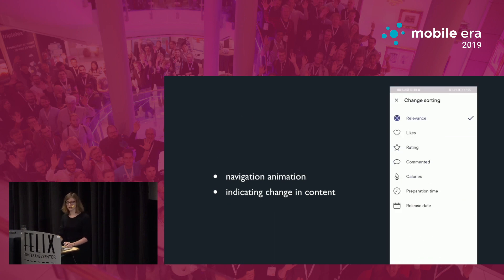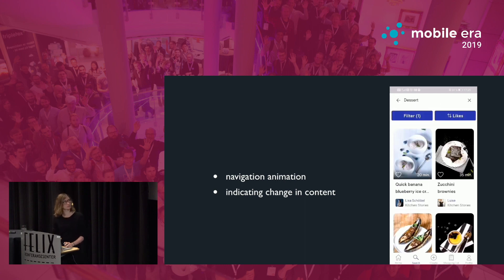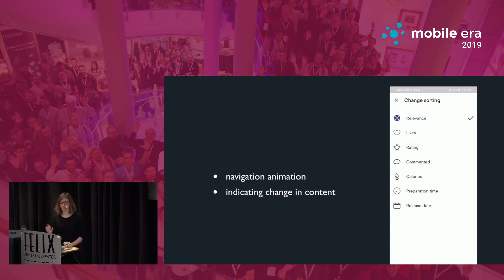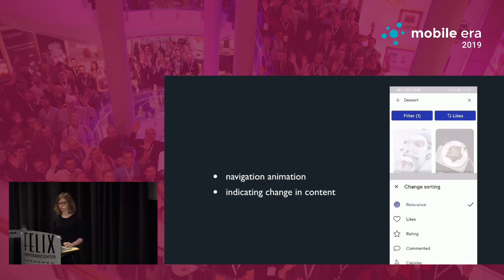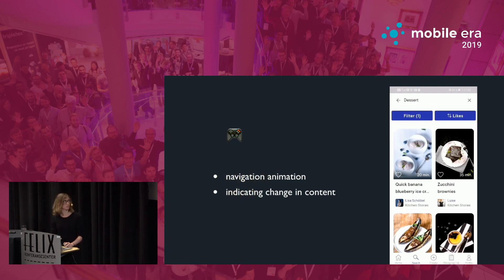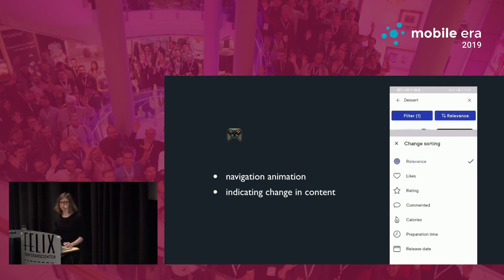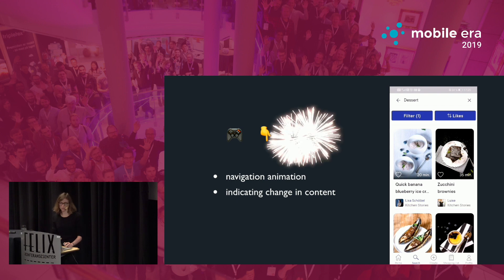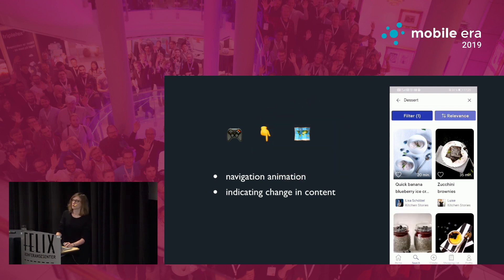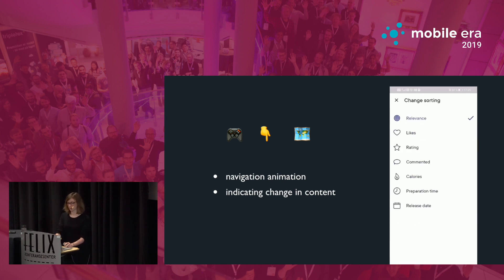Here is a kitchen app with recipes. It has a sliding-in animation from the bottom as a navigation animation, and it indicates change in the content by fading in new pictures whenever filters are updated. That makes the user more in control because they can slide elements in and out with touch control. We also have navigation animation with different screens sliding in depending on which part of the application we are in.